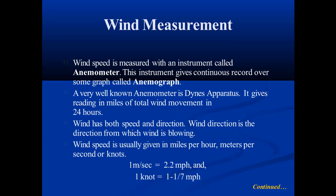Our next topic is wind measurement. Wind is measured with an instrument called an anemometer, and this anemometer records the air movement on a graph called an anemograph. A very well-known anemometer is the Dines apparatus, which gives readings in miles of total wind movement in 24 hours. Wind has both speed and direction. Wind direction is the direction from which the wind is blowing. Wind speed is usually given in miles per hour, meters per second, or knots. One meter per second is equal to 2.24 miles per hour, and one knot is equal to 1 and 1/7 miles per hour.